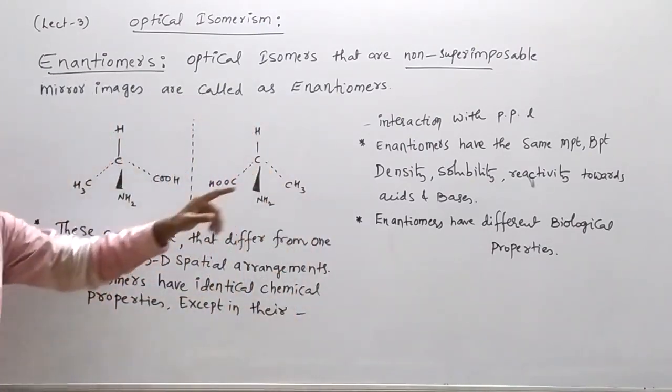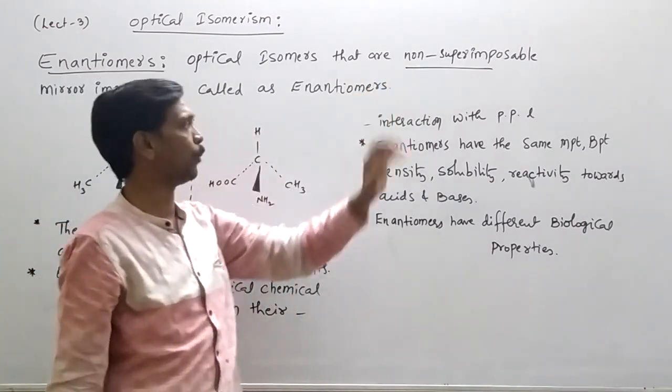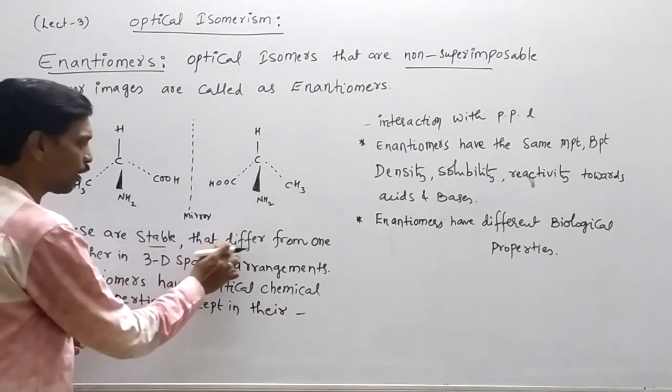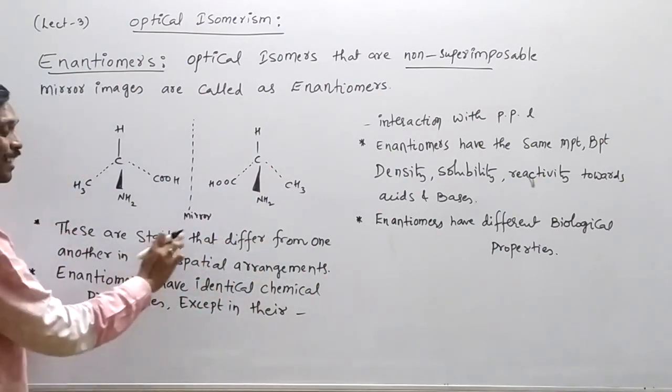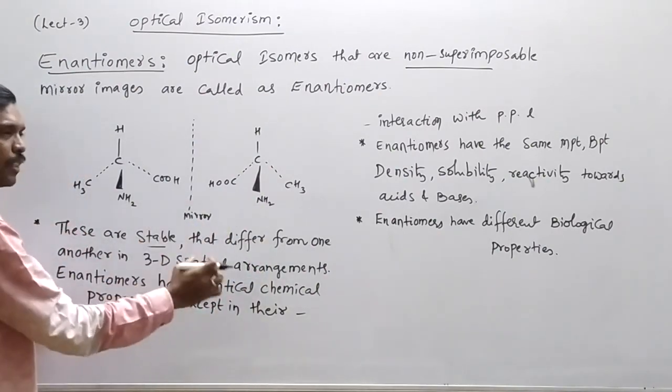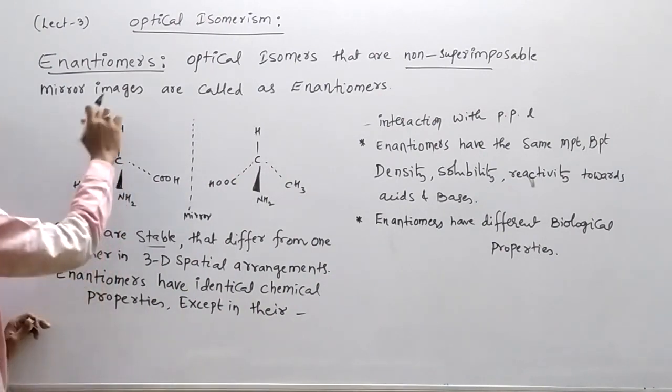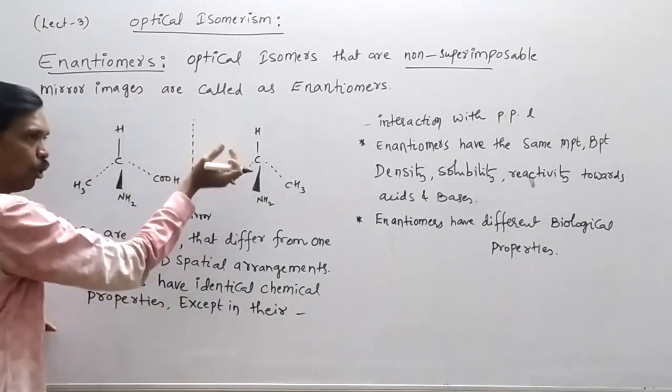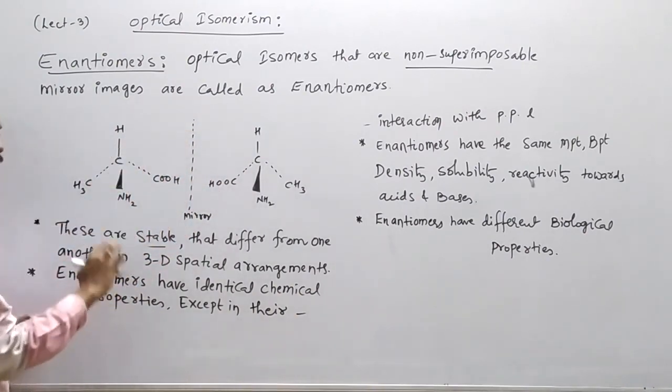So the enantiomers, what is the condition? Non-superimposable. This is an important point. These are stable compounds that differ from one another in 3D spatial arrangement. In space, if you have this atom on the right side, then you have this on the left side. What's the difference?